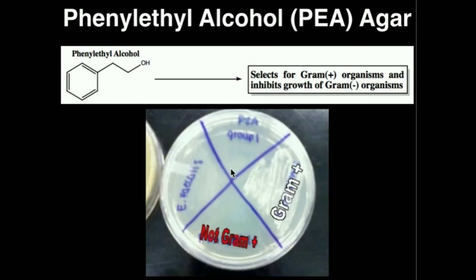Here's a general result of PEA agar that will give you an idea of what you're looking for. Pay attention to these two quadrants of this PEA agar dish. You can clearly see growth on this quadrant over here on the far right — because we see significant growth, that means we're dealing with a gram-positive organism. Over here, we really don't see significant growth, so that's going to be a gram-negative bacteria.